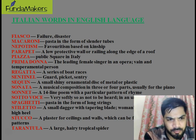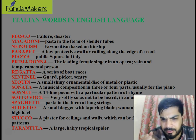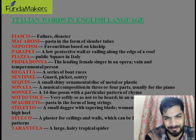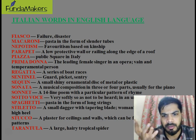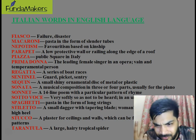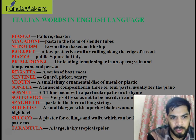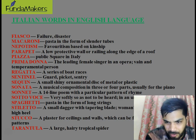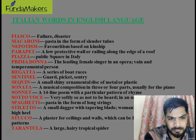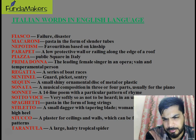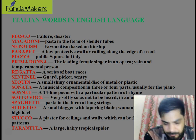'Spaghetti' is a kind of food. 'Stiletto' is a small dagger — a kind of knife — and stiletto also refers to pencil heels that girls wear. 'Stucco' is a plaster of Paris design used on ceilings. 'Tarantula' is a kind of spider with a lot of hair, usually not found in western nations. So these are the words from Italian that have made their way into English language and are commonly used.